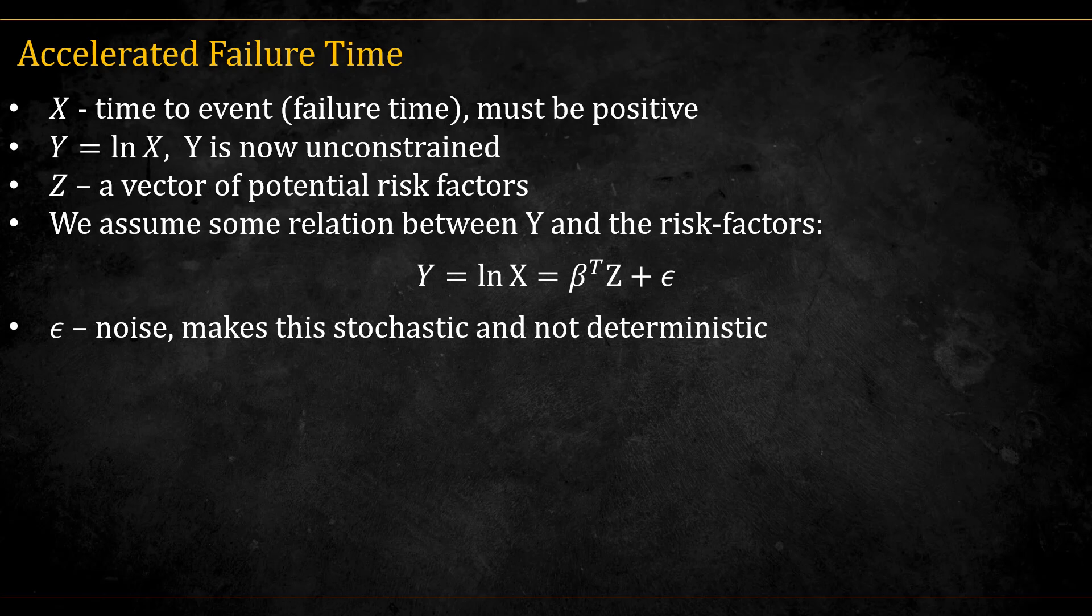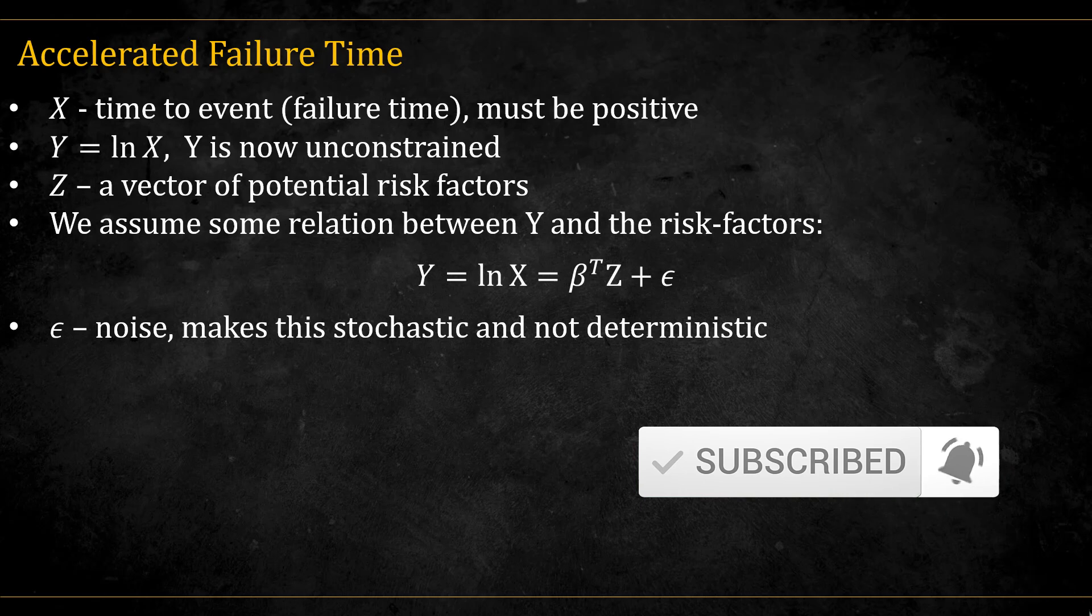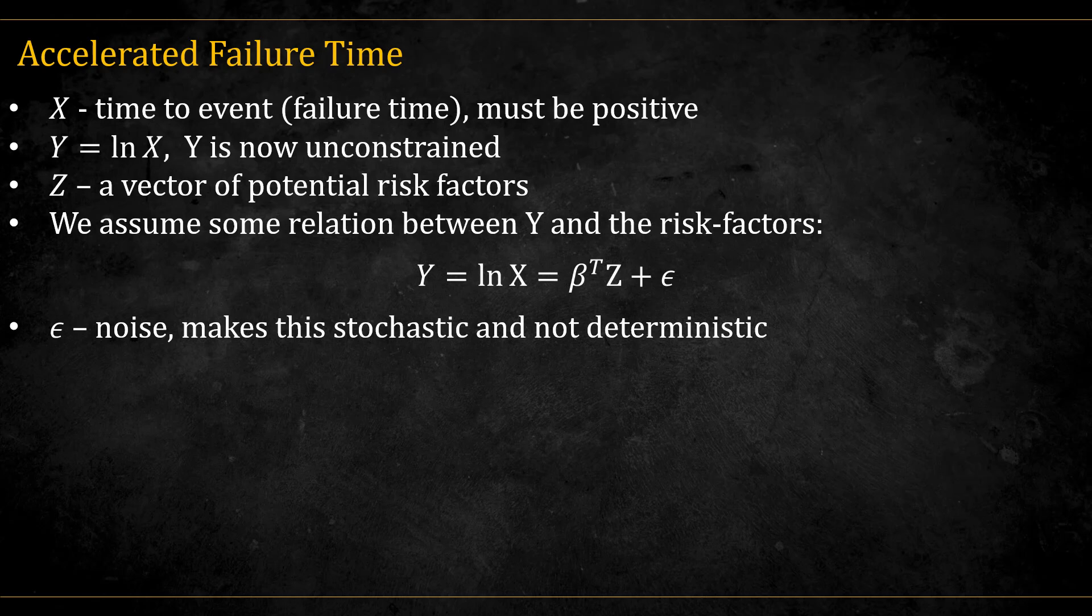So, how do we model the time to event in AFT? Let x be our time to event, y will be the log of x, and z a vector of potential risk factors. We assume a linear regression between the transformed variable and our covariate of interest, denoted here by z. Epsilon is the stochastic part.